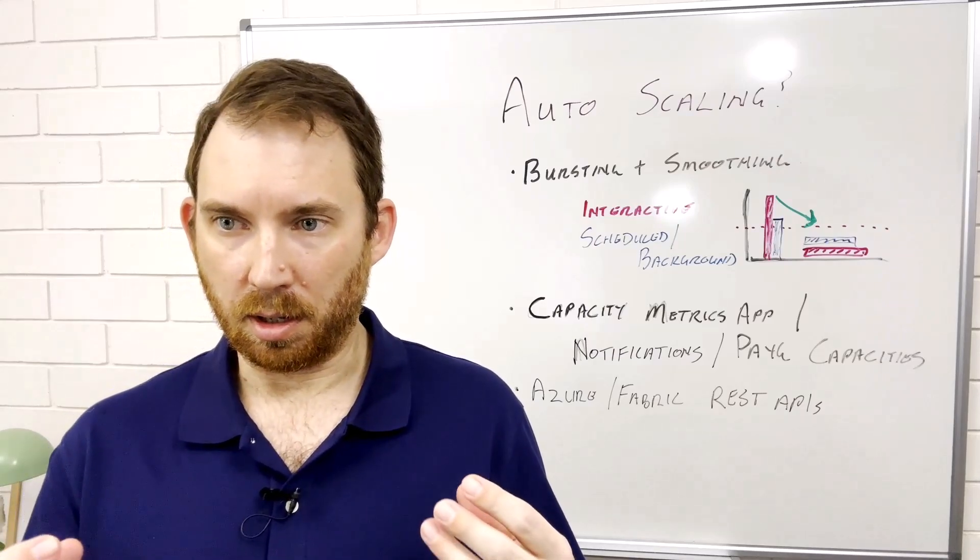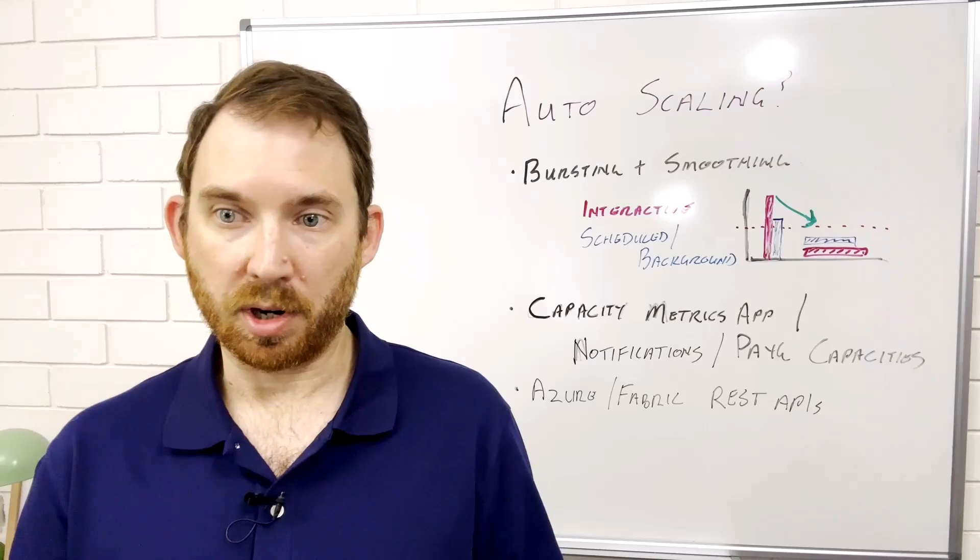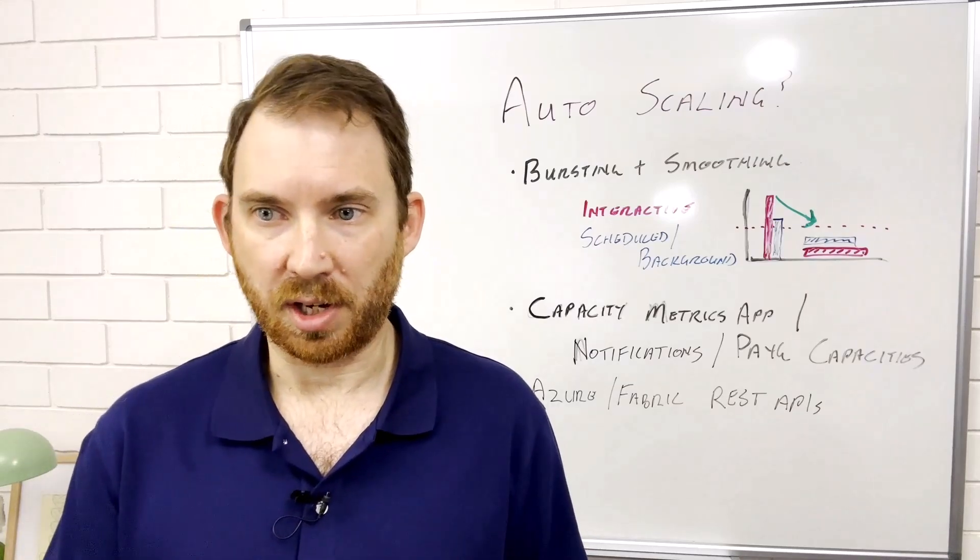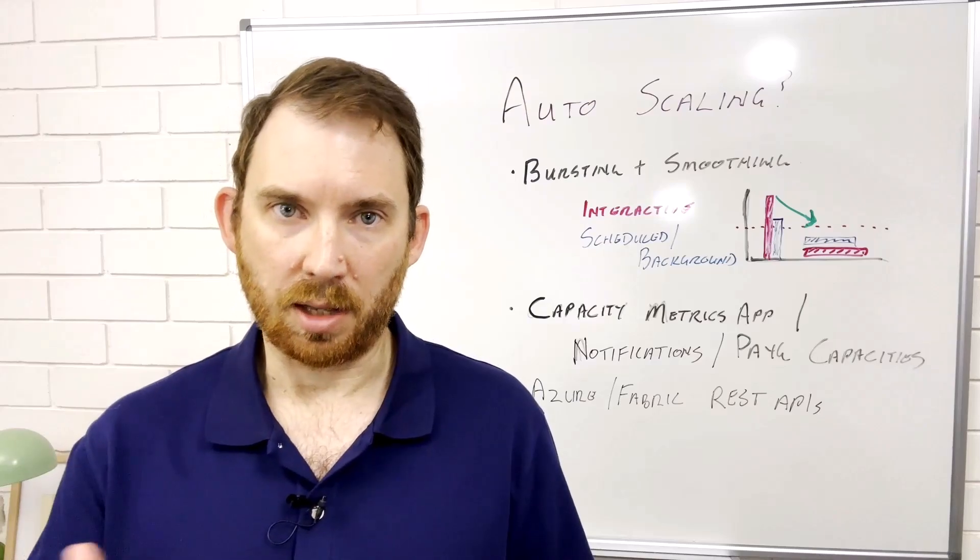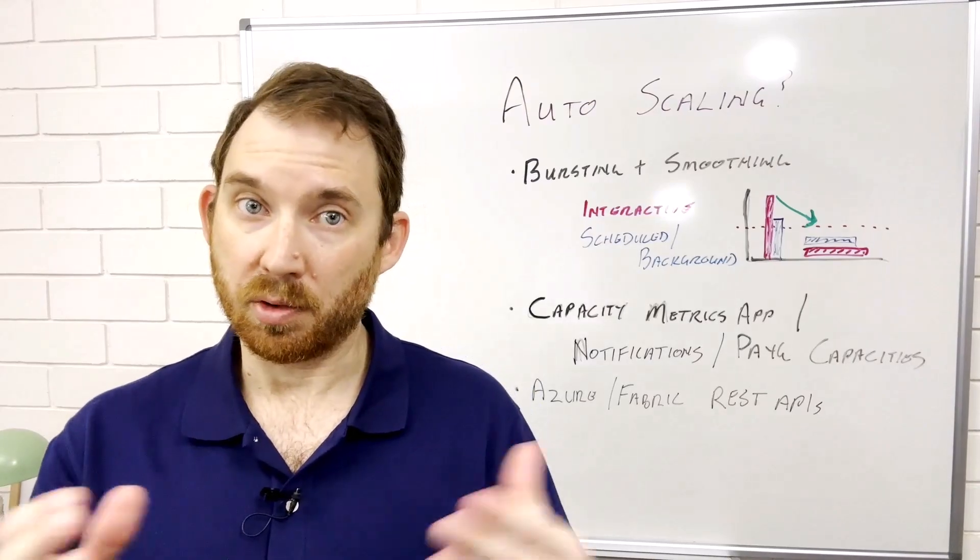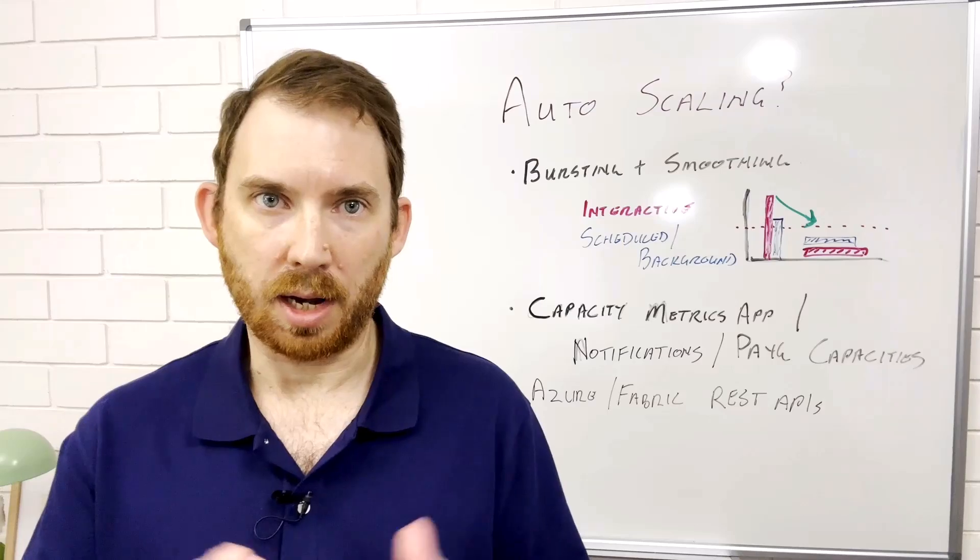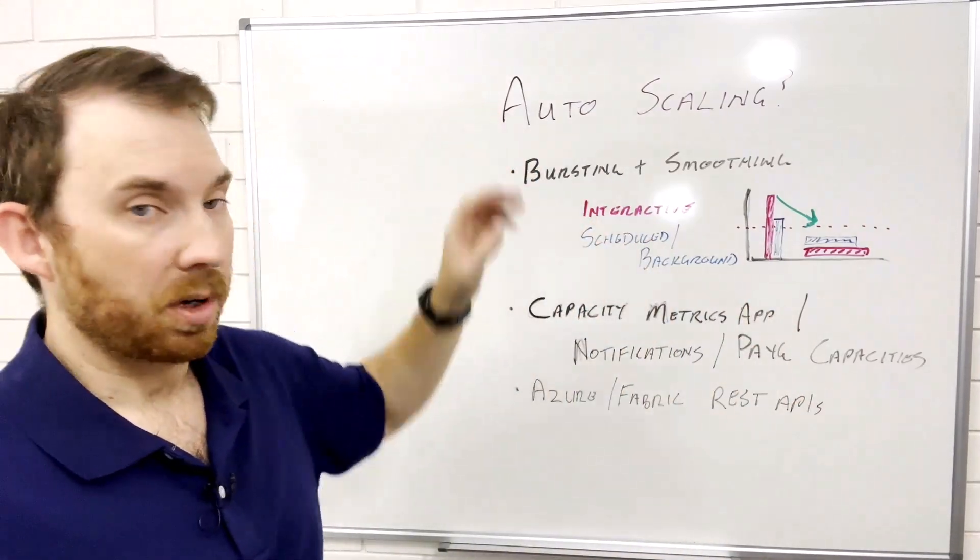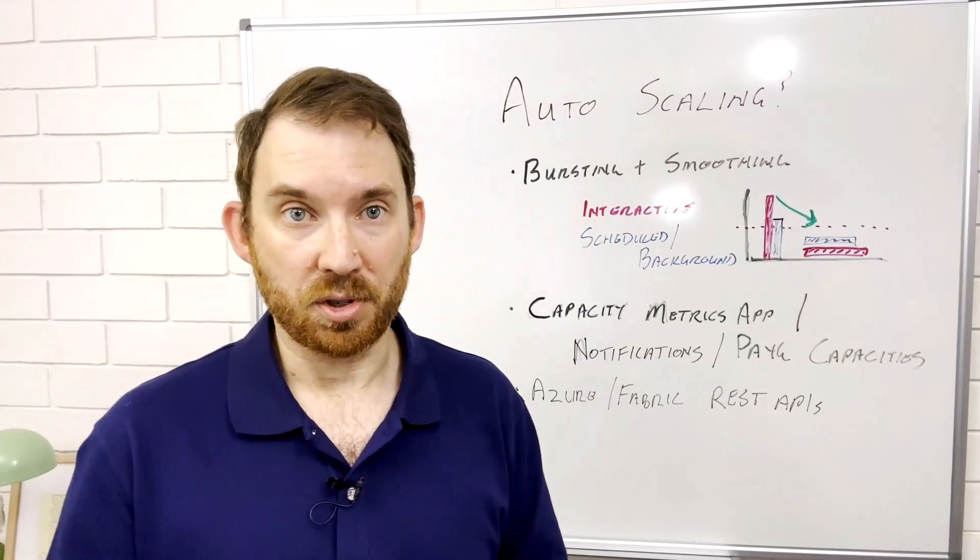The question went on to ask can it be triggered from a metrics capacity app, like if the capacity utilization hits 100% and scale it down. This is a response to a scaling video I put out a few weeks ago now talking about auto scaling in Fabric and what options do you have.